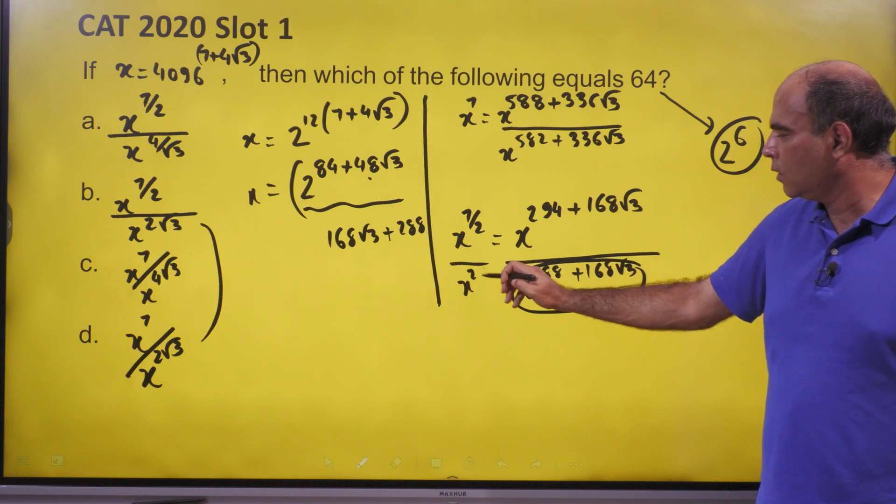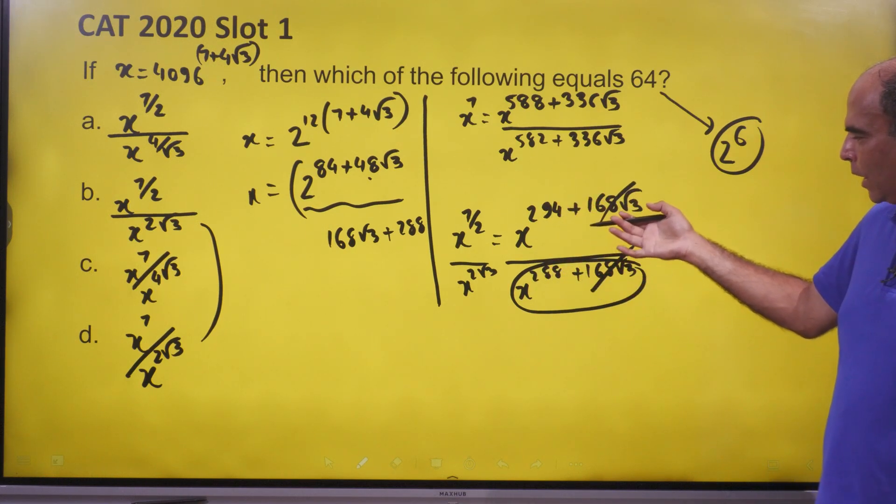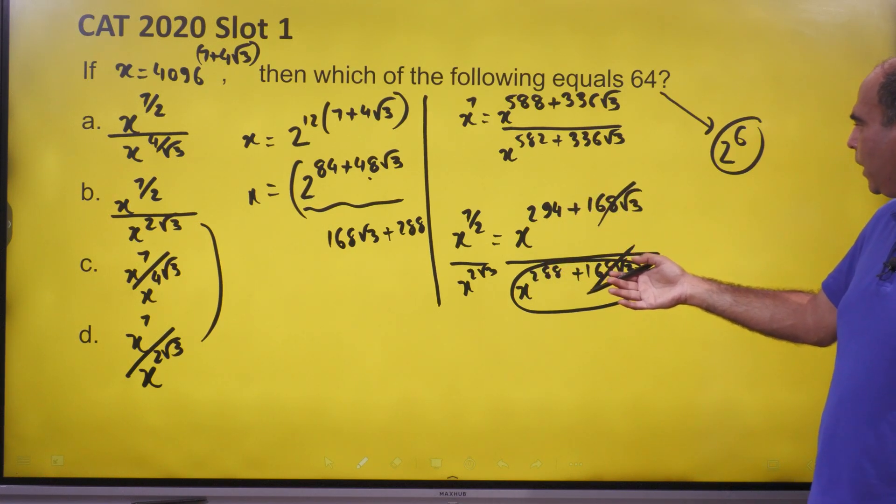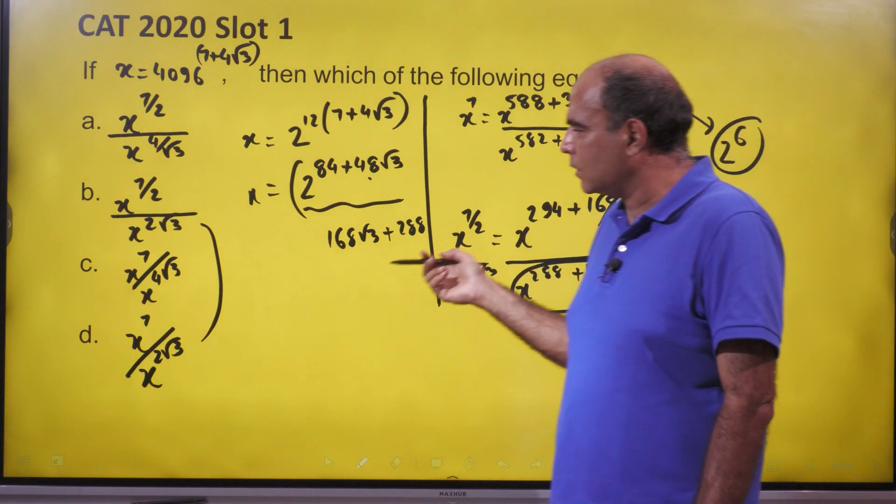On this, I have a cancellation of this and I have a cancellation of 2 raised to 294 by 288. So I'm going to get an outcome of 2 raised to 6.